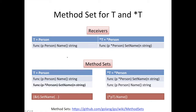Let's simplify: say T is a person type. I have a method with receiver P — a value receiver — called Name that returns a string. On the other side I have SetName, which takes a string parameter and sets the name, but receives a pointer to person. The method set for T is just that one Name method. It does not include SetName, which is defined for star T — that's why it's crossed out.